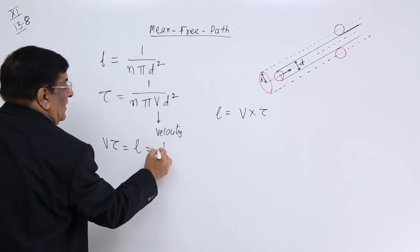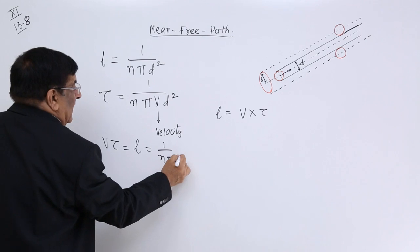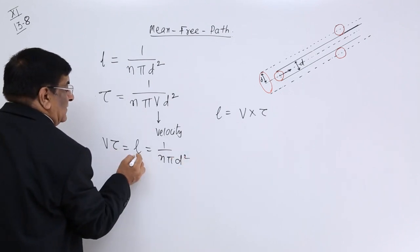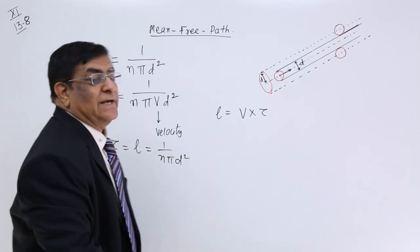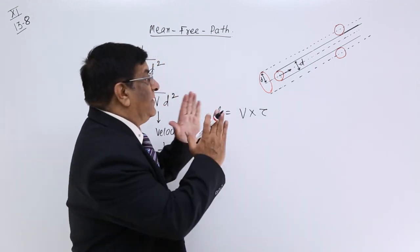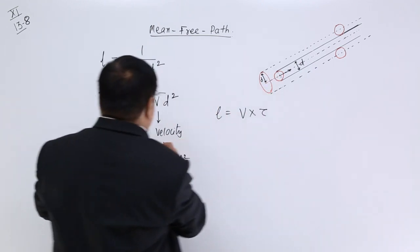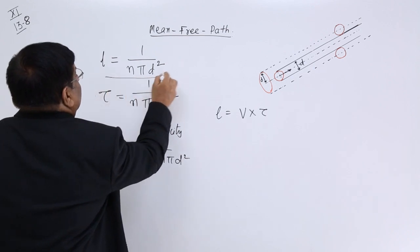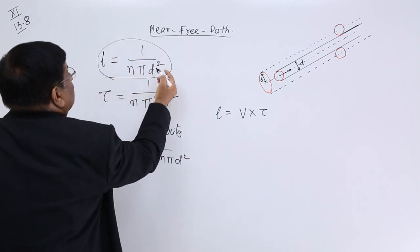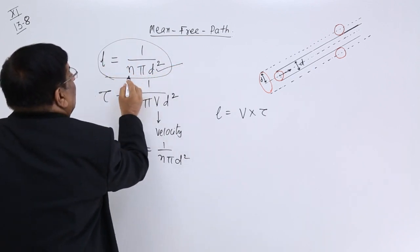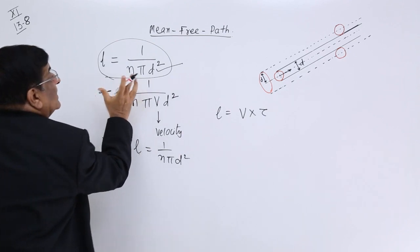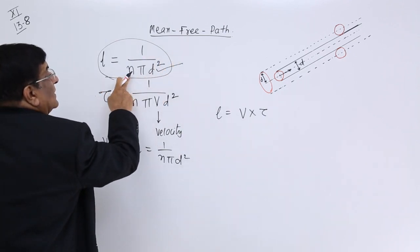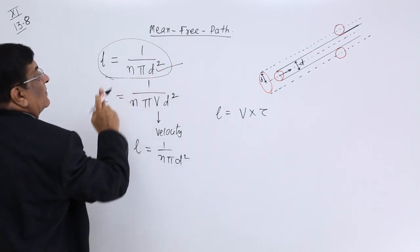So what is the formula of length of the path? That is 1 upon n pi d square and this is length of which path? When there is a second collision. So that is length between two consecutive collisions and it all depends upon diameter and the crowding of molecules, number of molecules per unit volume.